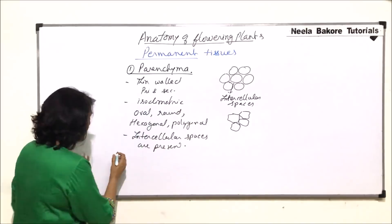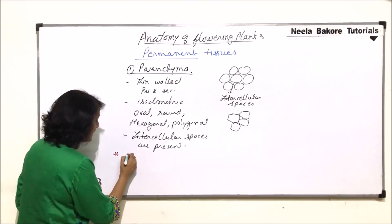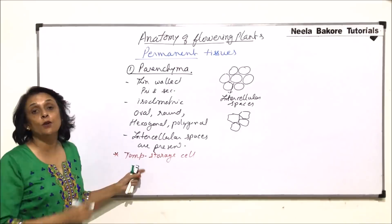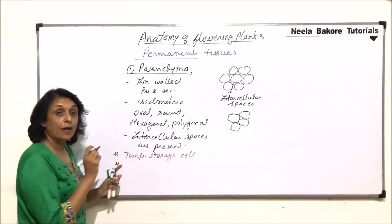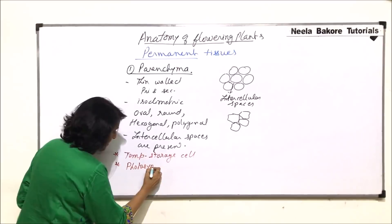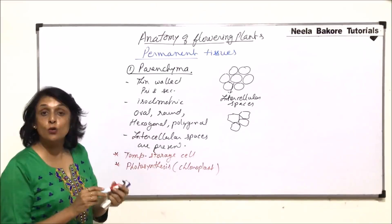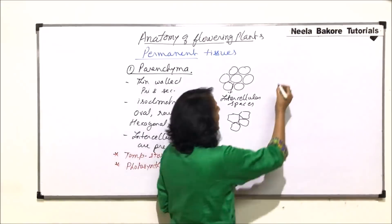Coming to the functions of parenchyma and its location: it acts as a temporary storage cell, meaning it can store things for a short period of time. Second, they may have chloroplasts, and if chloroplast is present, then they perform photosynthesis. If parenchyma has chloroplast, then that parenchyma is known as chlorenchyma.